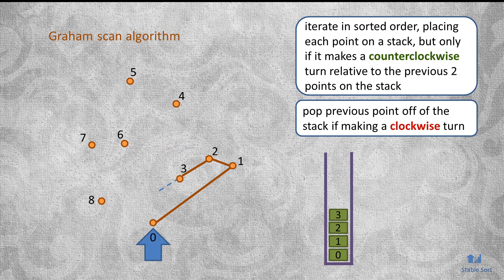In this example, points 2 and 3 were placed on the stack because at the time, the connecting lines were making counterclockwise turns. But point 4 creates a clockwise turn. So we roll back, popping off point 3, and then also point 2, until the resulting line is again making a counterclockwise turn.